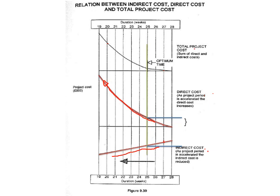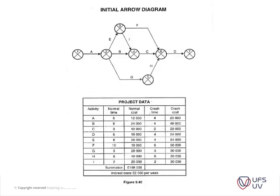Getting into the example: figure 9.40 shows a construction sequence involving activities A to I in arrow diagram format. The tabular data indicates the normal times, normal costs, crash times, crash costs, and the indirect costs of the project, which amounts to two thousand pounds per week. You can start reading from page 189.